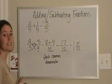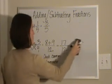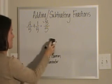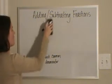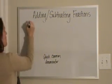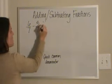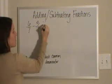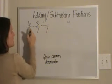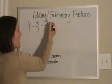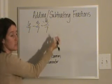You can use this same method when you subtract. 6 7ths minus 3 7ths. My denominator is the same, so I leave it alone. 6 minus 3 is 3. Again, this is simplified, so I'm done.